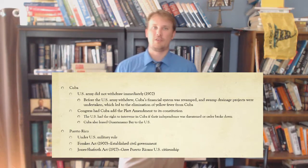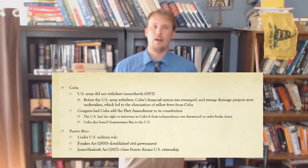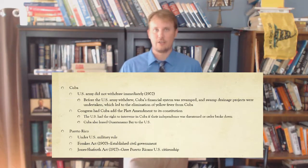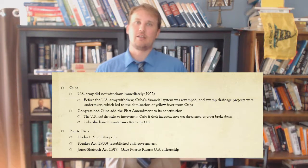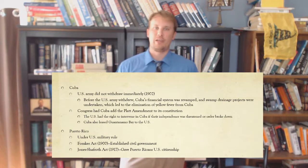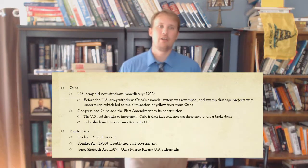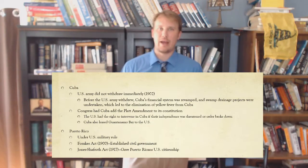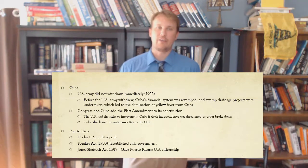The United States didn't withdraw from Cuba until 1908. Before withdrawing, they fixed Cuba's financial system, drained swamps, and eliminated yellow fever from Cuba — really building up Cuba's infrastructure. Congress had Cuba add the Platt Amendment to their constitution, giving the United States the right to intervene in Cuba if their independence was threatened or if order broke down — a backdoor for U.S. involvement. Cuba also leased Guantanamo Bay to the United States. Puerto Rico was placed under U.S. military rule. The Foraker Act in 1900 established a civil government for Puerto Rico, and the Jones-Shafroth Act in 1917 gave Puerto Ricans U.S. citizenship.